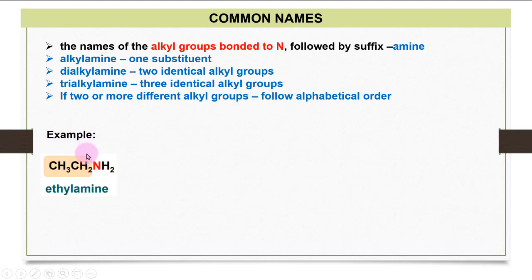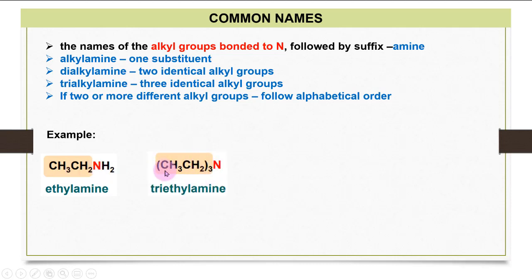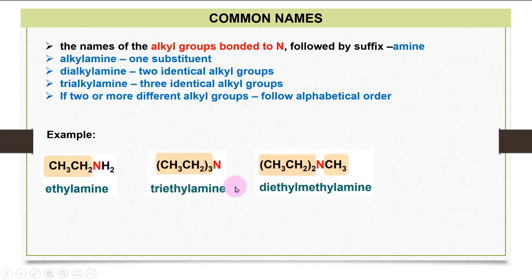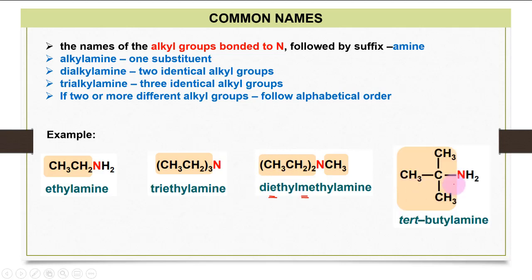For the first example with a CH3CH2 group, that is an ethyl group, so the common name is ethylamine. With three identical ethyl groups, it is triethylamine. If you have two identical ethyl groups with another different group, arrange alphabetically — E before M — giving diethylmethylamine. Lastly, a tert-butyl group attached to nitrogen is named tert-butylamine.